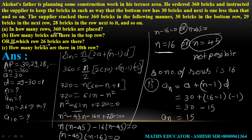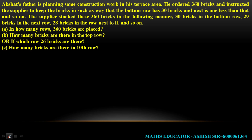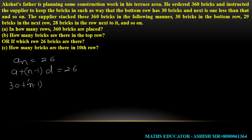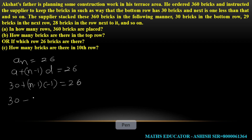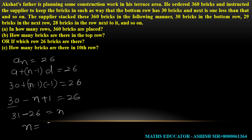Which row has 26 bricks? Set an = 26. Using the formula: a + (n−1)d = 26. Substituting a = 30, d = −1: 30 + (n−1)(−1) = 26, so 30 − n + 1 = 26, giving 31 − n = 26, therefore n = 5. The 5th row has 26 bricks.